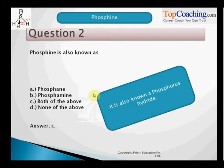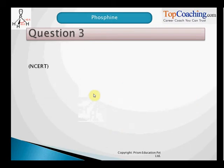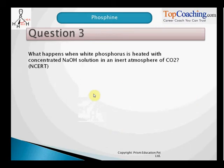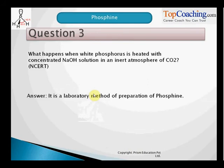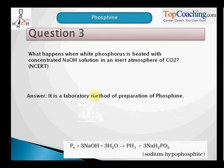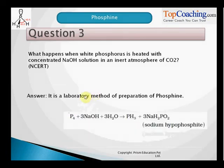What happens when white phosphorus is heated with concentrated NaOH in an inert atmosphere? This is the laboratory method of preparation of Phosphine. When white phosphorus is heated in the presence of sodium hydroxide in water, we get Phosphine.